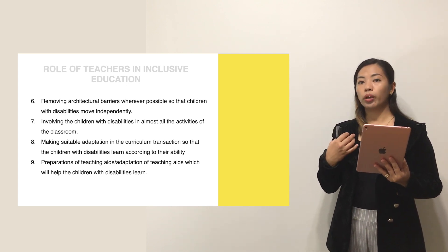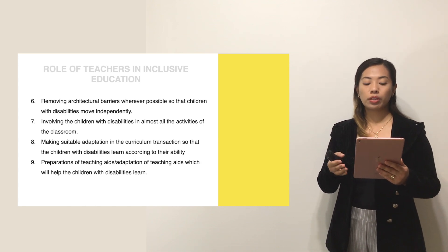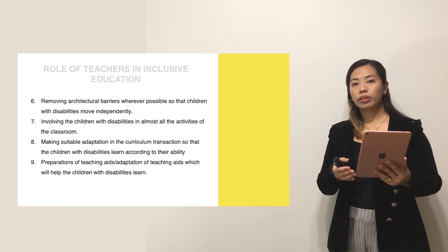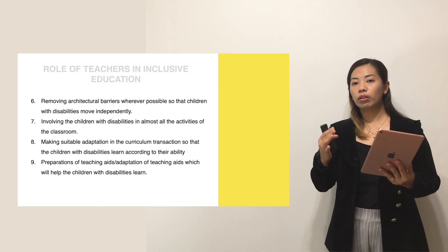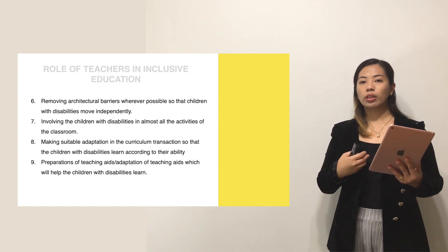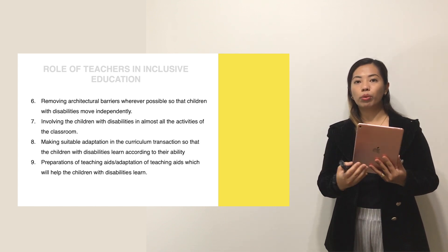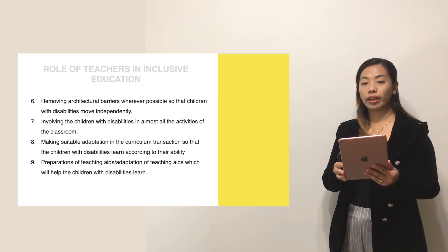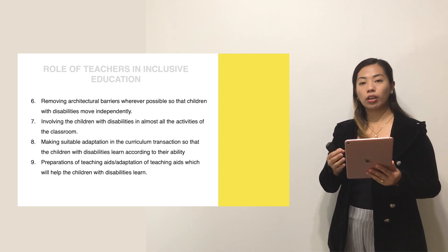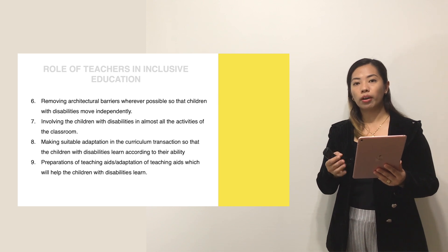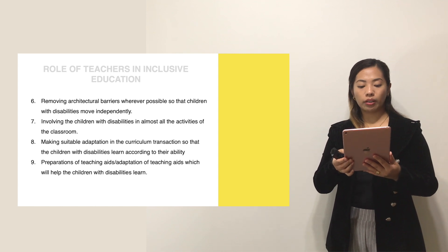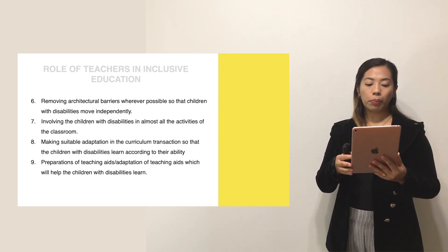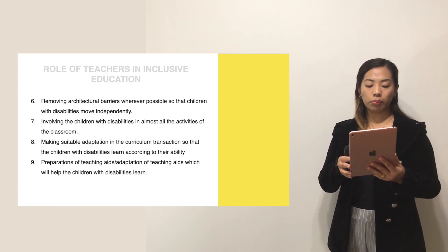Teachers should remove architectural barriers wherever possible so children with disabilities can move independently, and plan seating arrangements that allow children with disabilities to move freely. A very important role is to involve children in almost all classroom activities, as this helps them learn more. Teachers should also make suitable adaptations to the curriculum so children with disabilities can learn according to their ability, and prepare or adapt teaching aids that help children with disabilities.